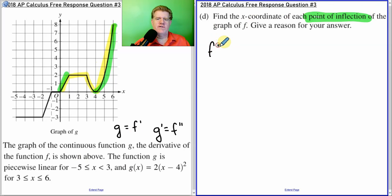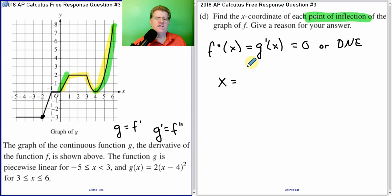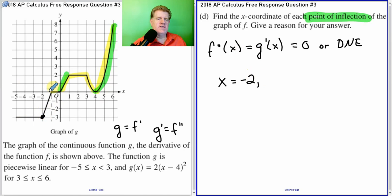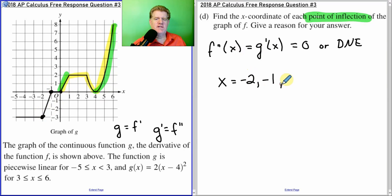So, points of inflection deal with the second derivative. And remember, the second derivative of F is the same as the first derivative of G. And we're looking for values where either this equals 0 or does not exist. That would be potential points of inflection. So, what are our candidates? Our candidates for G prime. So, where is this slope equal to 0? Now, the slope equals 0 all the way from negative 5 to negative 2. So, there's nothing we can really do. There's no points of inflection. There's just nothing there.